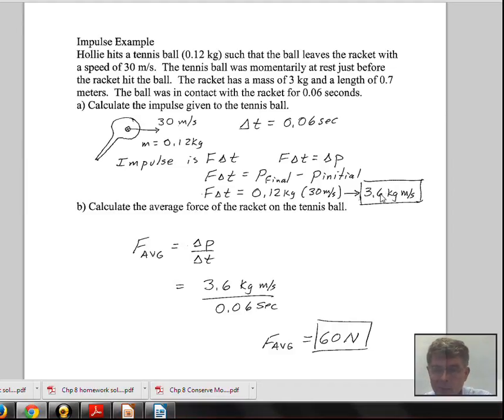Now that we know that, we can use the time information and calculate the average force. Newton's second law here: the average external force applied to the tennis ball equals the change in momentum divided by the length of the collision, delta P over delta T. We get 3.6 divided by 0.06, we find 60 newtons. That was the average force of this collision.